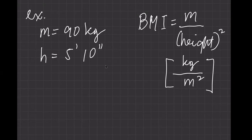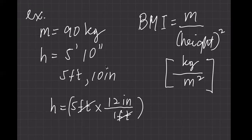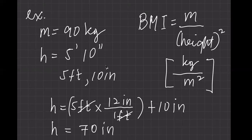For height, I have 5 feet 10 inches, so I need to convert this into meters. 5 feet times 12 inches per foot gives 60 inches, and then adding the 10 inches gives a total height of 70 inches.